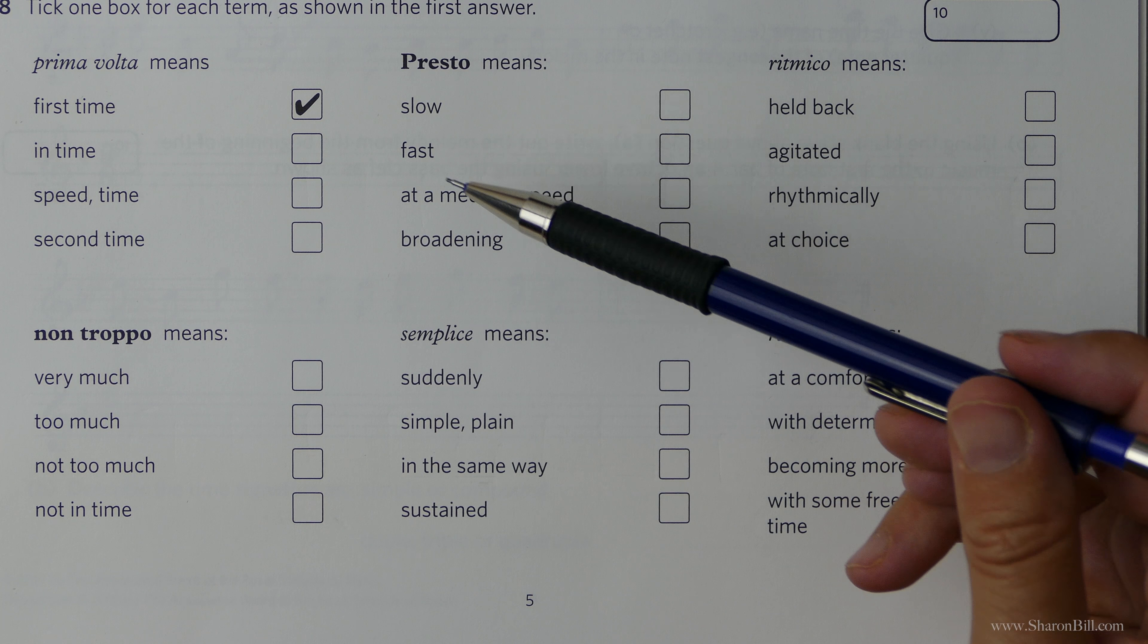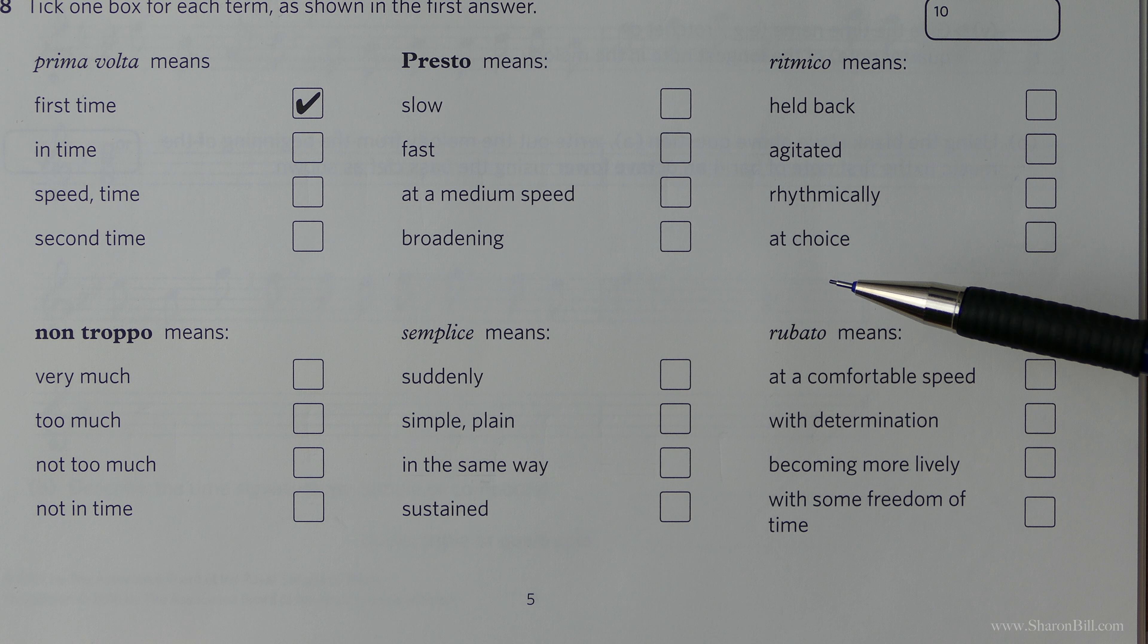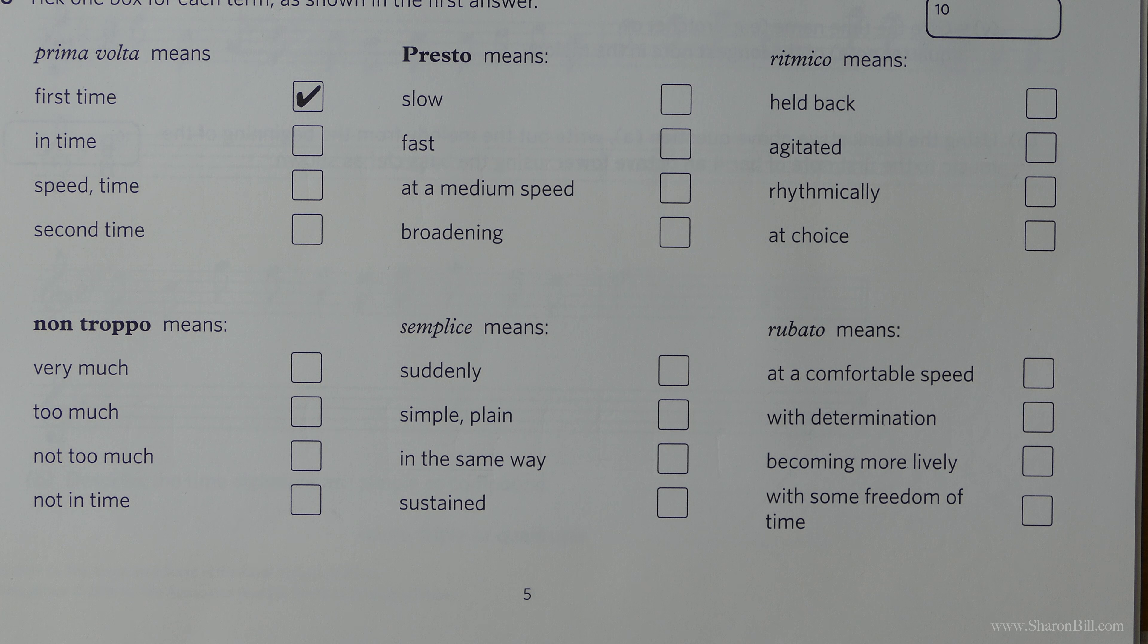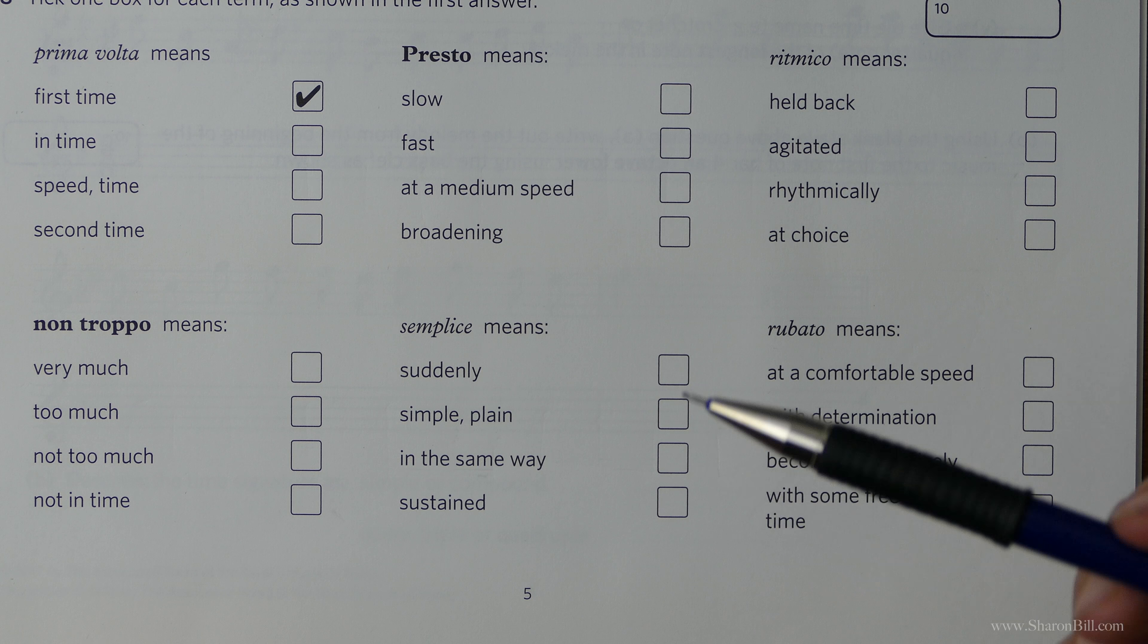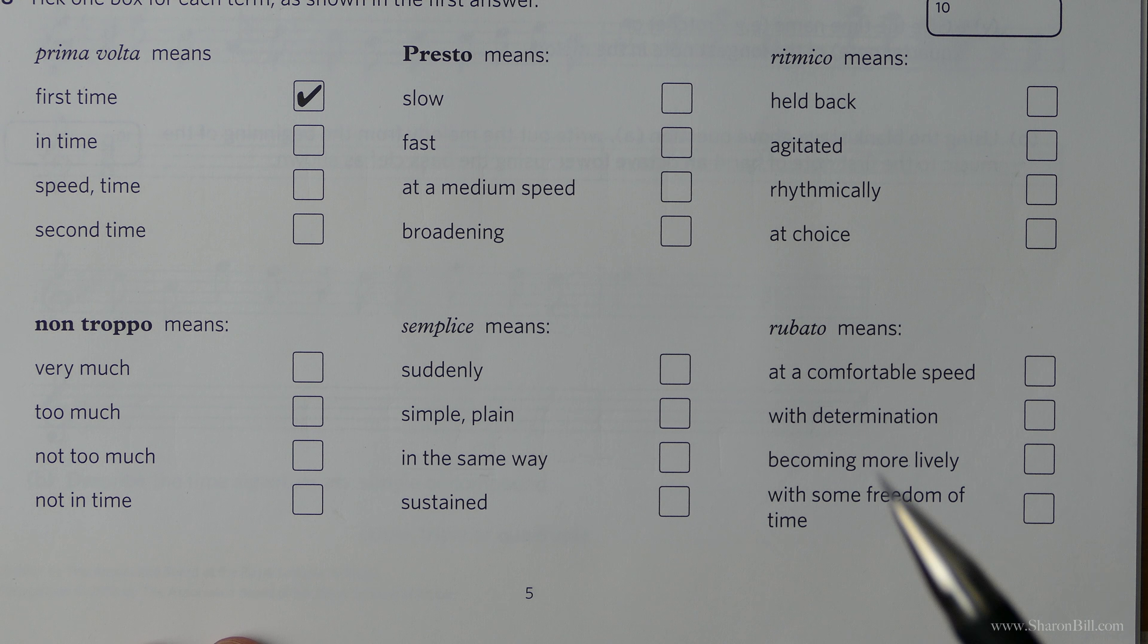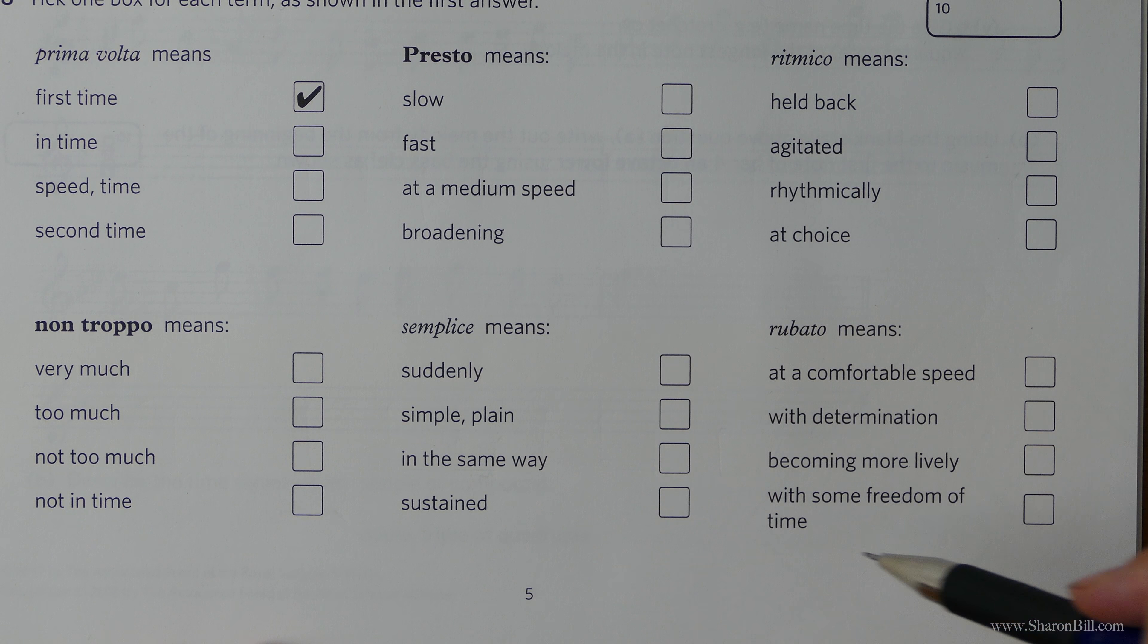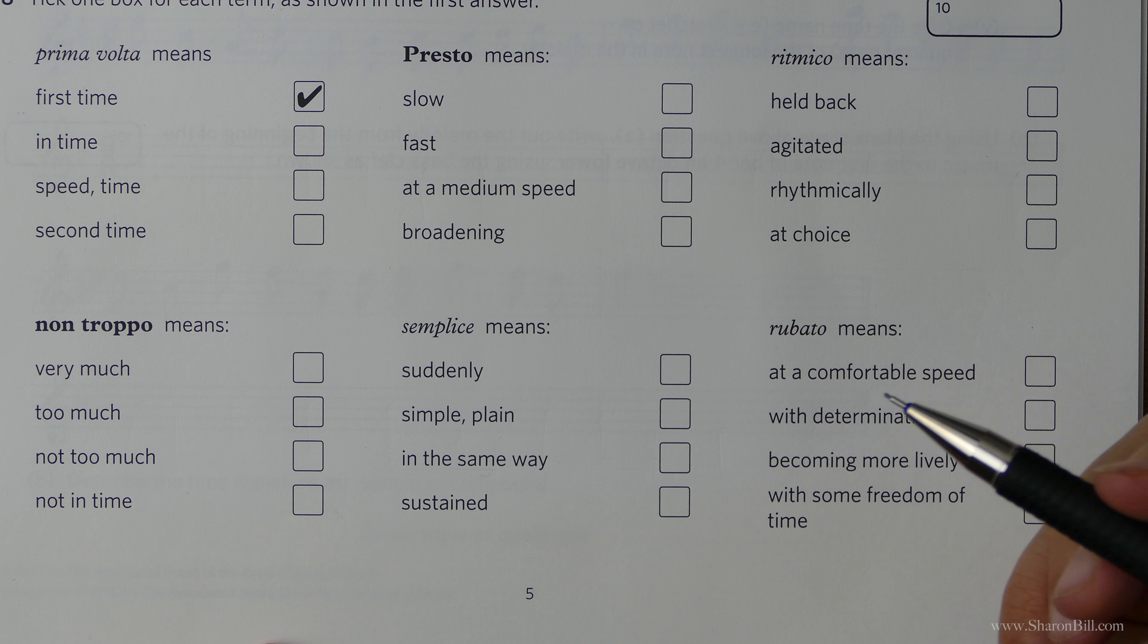Don't be misled by the fact that it's multiple choice. That's no excuse for not revising it. If anything, it can confuse us rather than help us because there are some red herrings there that could just throw us off scent. So there's no alternative but just to revise these. I suggest that you group all of the terms that are thematically linked from each grade. So all of grade one, two and three words and terms and signs that might mean slow or fast or loud or quiet.